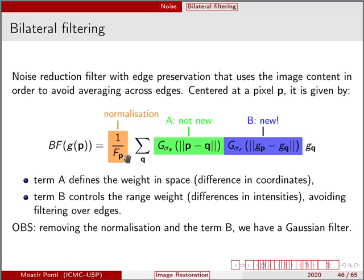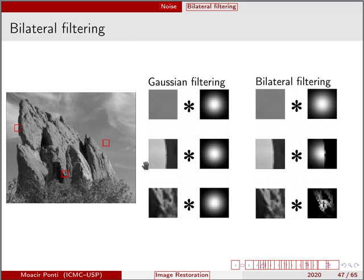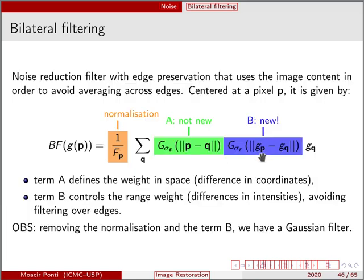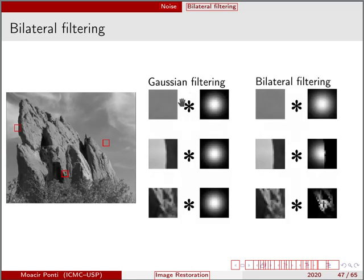So by removing the normalization and the term B, what we have is a normal Gaussian filter. And this is the effect of the bilateral filter. When we compare to the Gaussian filter, to the regular Gaussian filter, when we observe or when we center the pixel at the flat region, the differences between the pixels here are not significant. So this term here, the difference is zero, basically, or the difference basically does not exist. So because we don't have, we have a very low difference here, what it remains is just a Gaussian, a regular Gaussian filter.